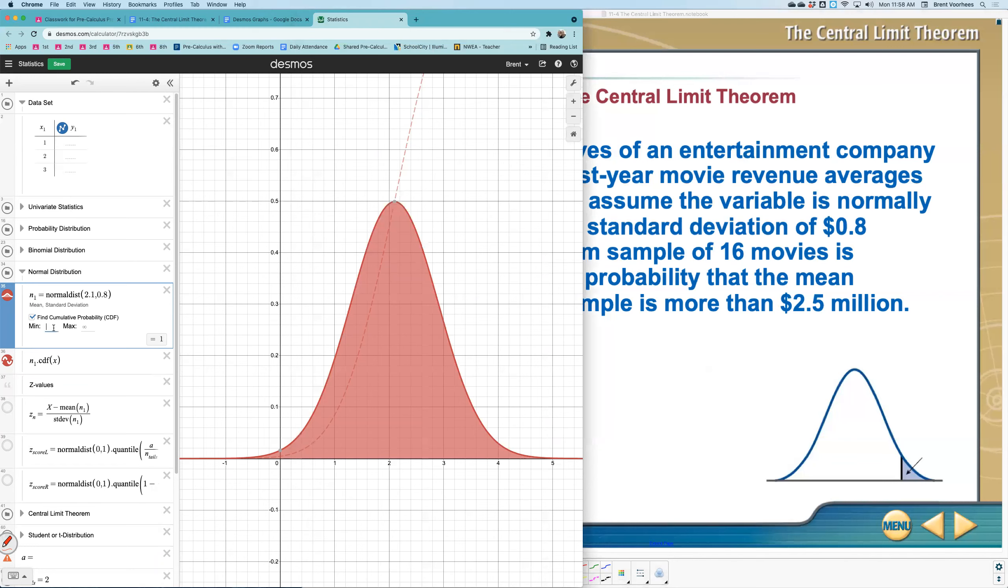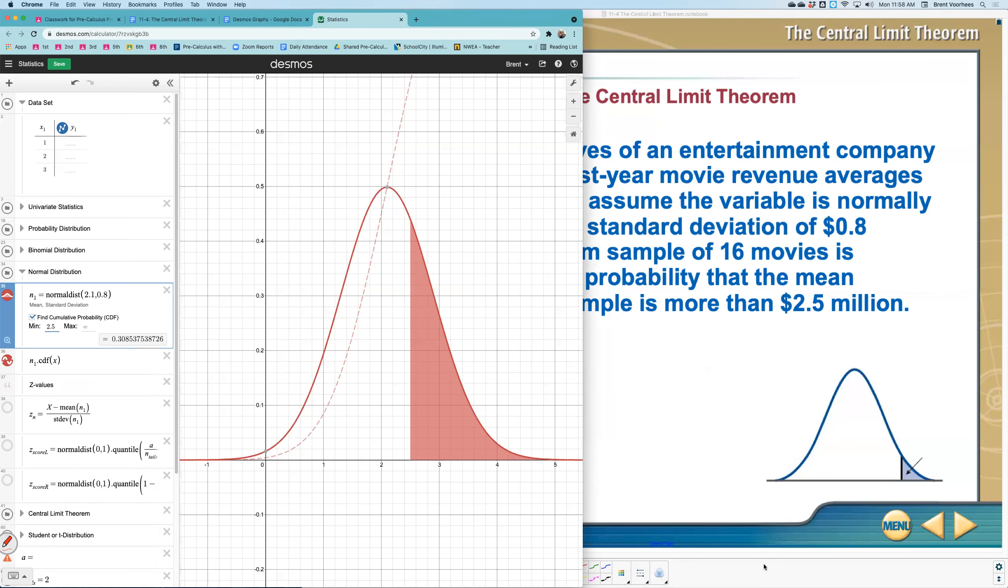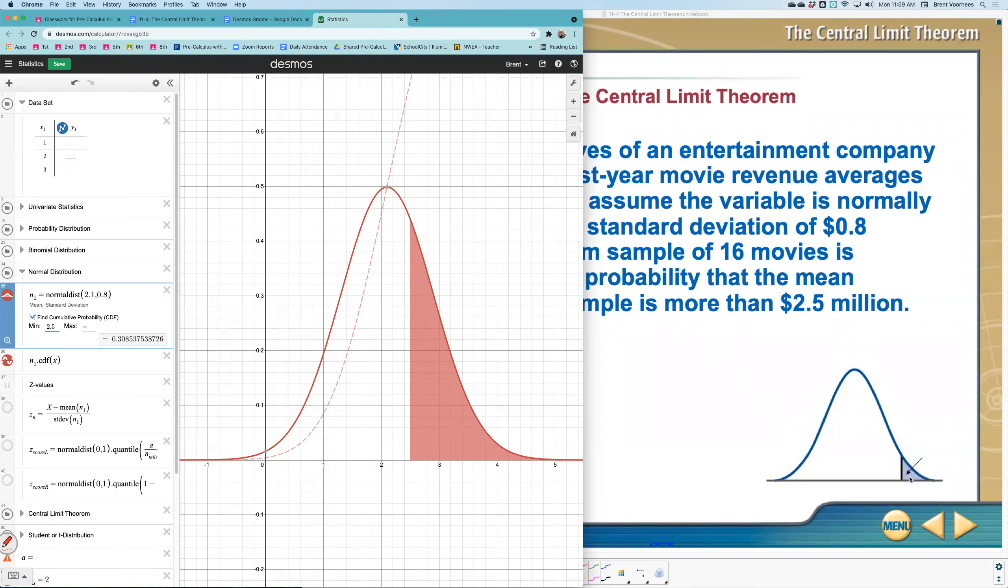If a random sample of 16 movies is selected, find the probability that the mean of the revenue sample is more than $2.5 million. A lot of people are going to say, okay, to be more than $2.5, let's just put that right here. Now we have a problem. When you look at this diagram here, it doesn't seem to match the probability over here.